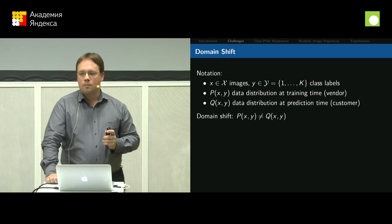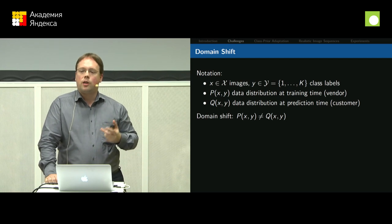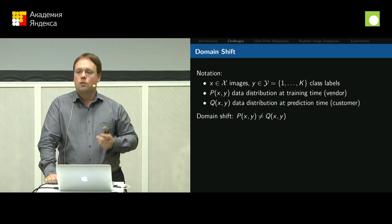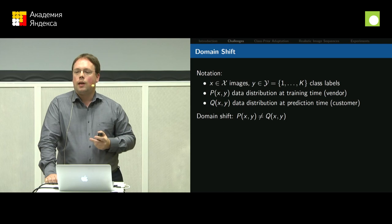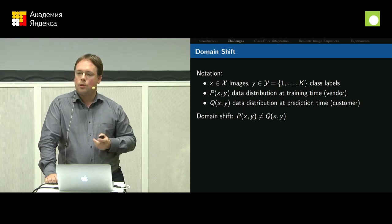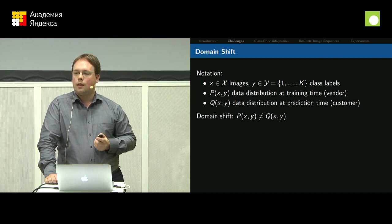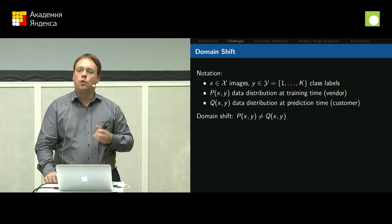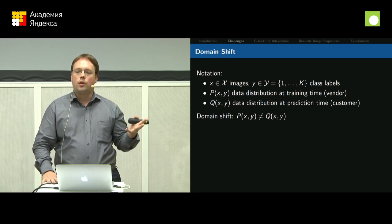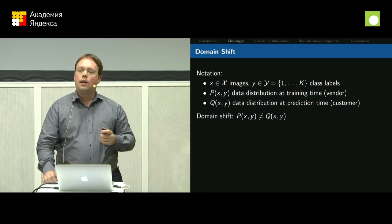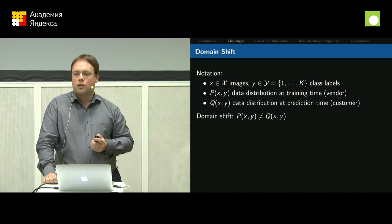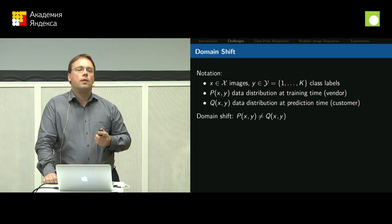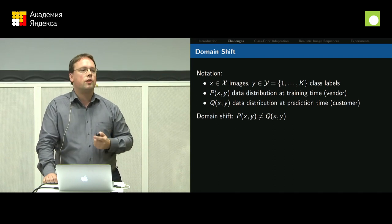Let me introduce a little notation. I'll talk about images as samples from a distribution X — X will denote any kind of image. The task is to predict labels Y — just any number between 1 and K for a K-class classification problem. There's a distinction between training time and prediction time: I'll call the training distribution P of X and Y, and the distribution at prediction time Q of X and Y. The domain shift I talked about just means P of X,Y is not the same as Q of X,Y.